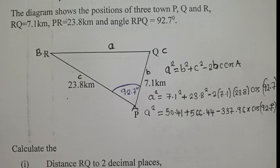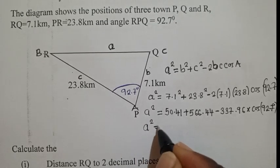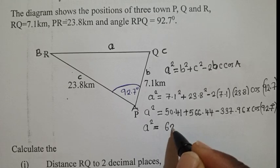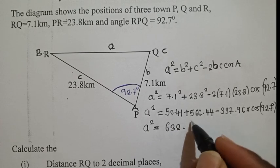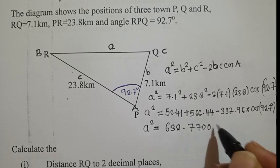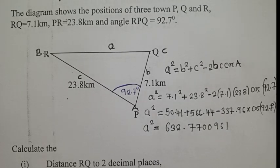So I'm punching right here, I'm getting, on my calculator here, I'm getting 632. So if your calculator is in degrees, you must be getting 632.7700961. Now, this is what you must get.